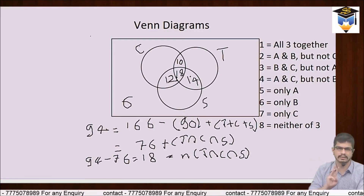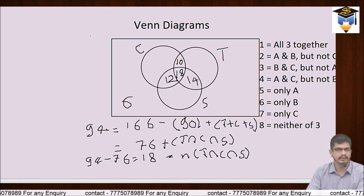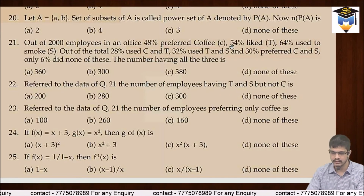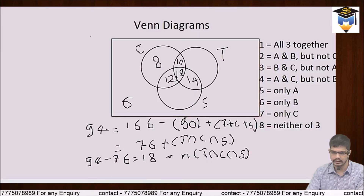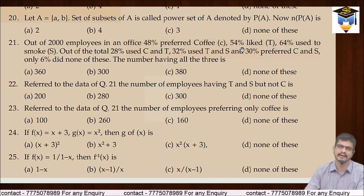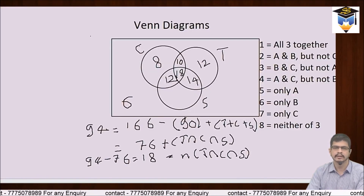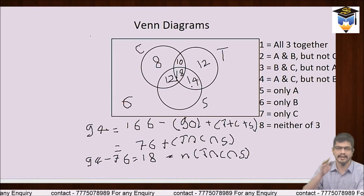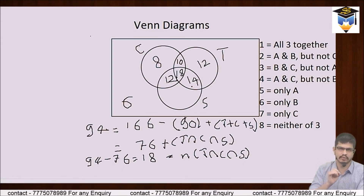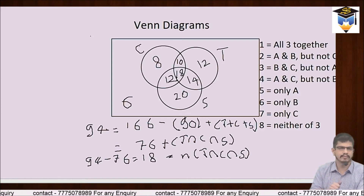Ab only coffee: total 48 mein se (18 + 12 + 10) = 40 nikalenge, bache 8%. Only tea: total 54 mein se (10 + 18 + 14) = 42 nikalenge, bache 12%. Only smoke: total 64 mein se (12 + 18 + 14) = 44 nikalenge, bache 20%. Toh 20% log sirf smoke karte hain, 8% sirf coffee peete hain, aur 12% sirf tea peete hain.